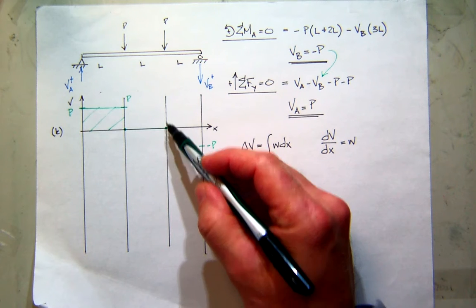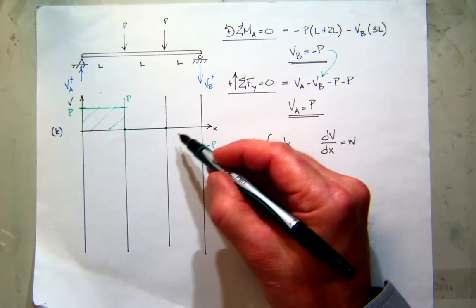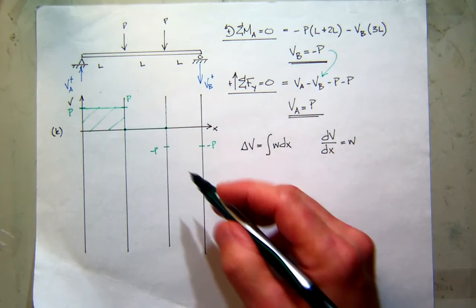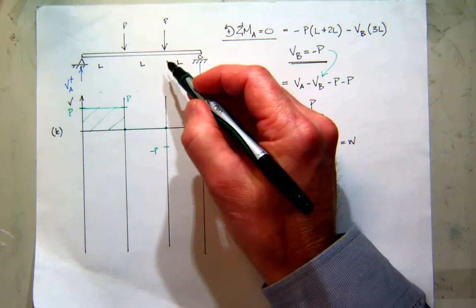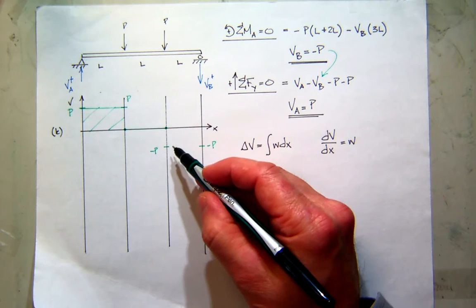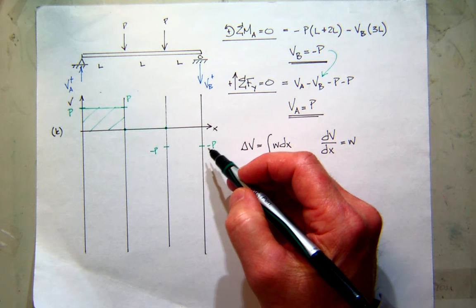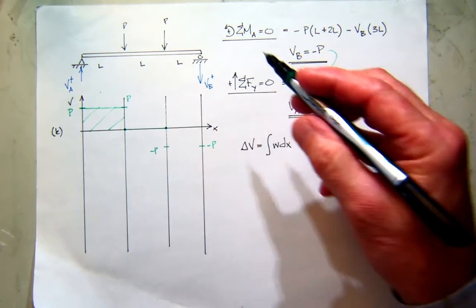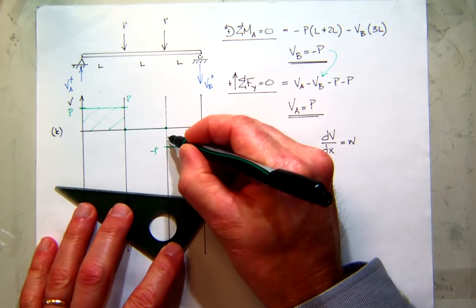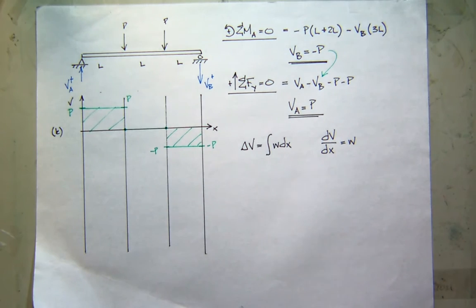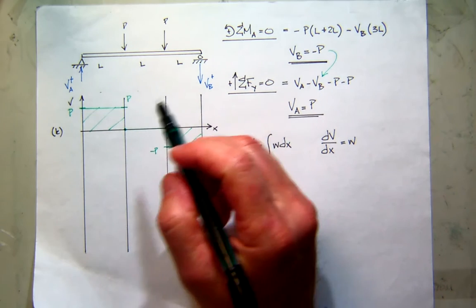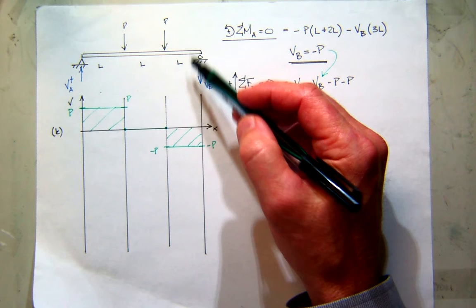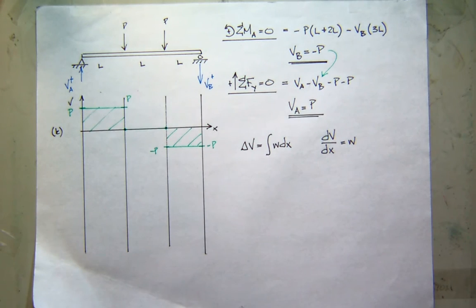As I go from the left side of the second point load to the right, my shear changes by zero minus P, which is negative P. And what's the change in shear over the last third? The area of the load curve is zero, so no change. Minus P plus nothing is minus P — I hit my target! The shape is a horizontal line since the load is zero. So this is the complete shear diagram. If you did this with equations, you'd need three separate sets — one for each third of the beam — so this graphical method is much more efficient for point loads.